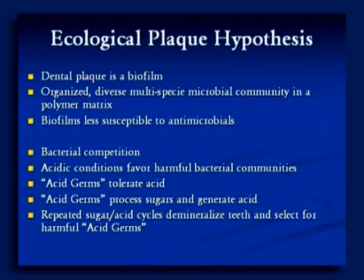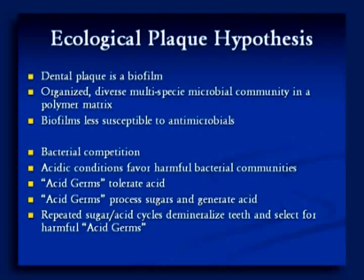There's competition in this biofilm — the bacteria are competing for their space on the teeth. Acidic conditions favor harmful bacterial communities, so the more acid they produce, the more they out-compete other bacterial species. That's why they look for sheltered little areas where they can hide. It's the acid germs — strep mutans and other acid-forming bacteria — that process sugars very efficiently and make acid. The more acid they make, the more it favors their own selection. It's a vicious cycle: more acid, more acid germs, more acid germs, more acid — and they keep forming their own protected community.